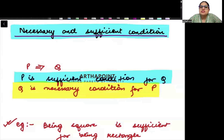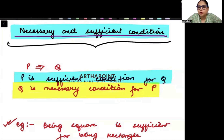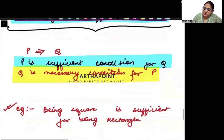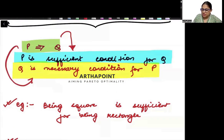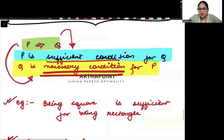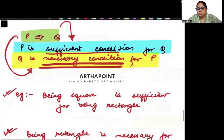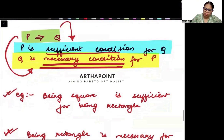Now, let's go to one important thing, which is called as Necessary and Sufficiency Condition. Beta, when we write P implies Q, ki agar P hoga to Q hoga. If P will happen, then Q will happen. P implies Q. P hoga to Q hoga. P is called as sufficient condition for Q. Q is called as Necessary Condition for P. P is called sufficient condition for Q. Q is called Necessary Condition for P.